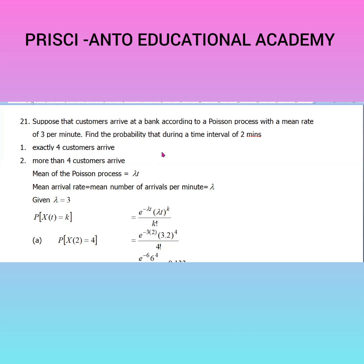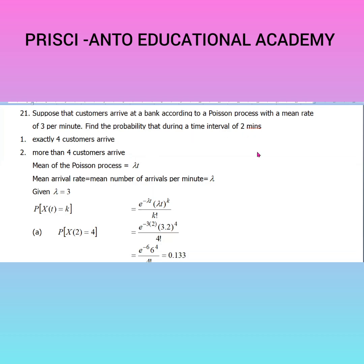Find the probability that during a time interval of two minutes: subdivision one — exactly four customers arrive; subdivision two — more than four customers arrive.